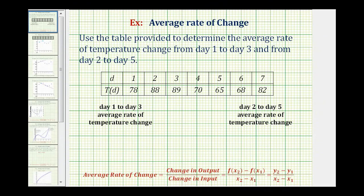We're asked to use the table to determine the average rate of temperature change from day one to day three, and from day two to day five. Looking at our table, D represents the day, and T of D represents the temperature on that day.